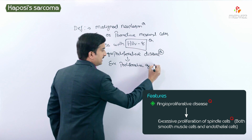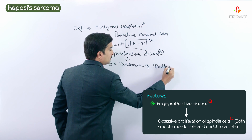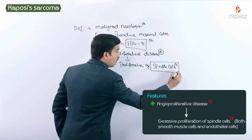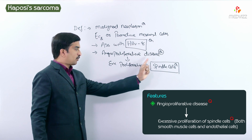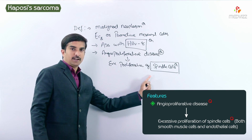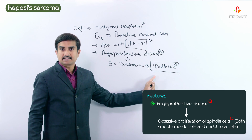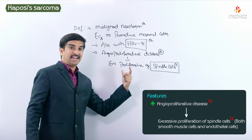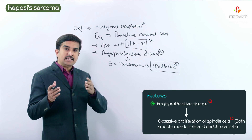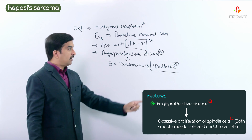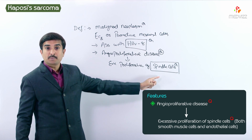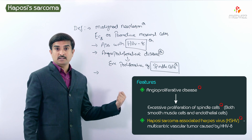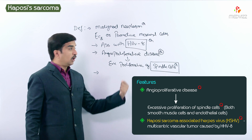Histologically you will see a majority of spindle cells. It is an angioproliferative disease with excessive proliferation of spindle cells that have features of both smooth muscle cells as well as endothelial cells — that is why they are described as spindle cells, sitting between endothelial and smooth muscle cell characteristics.